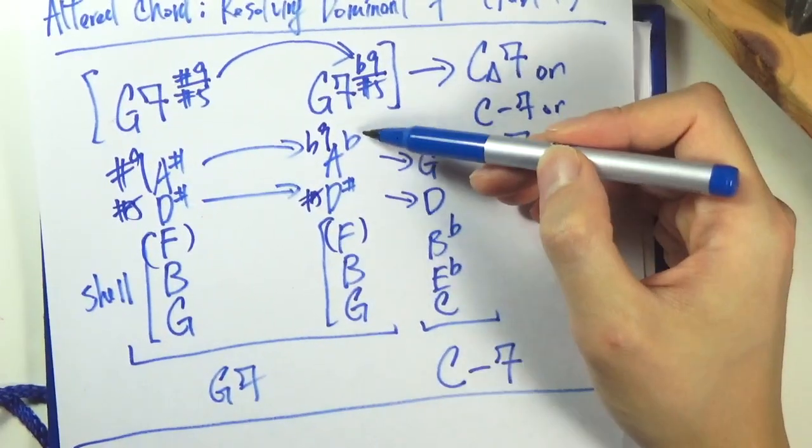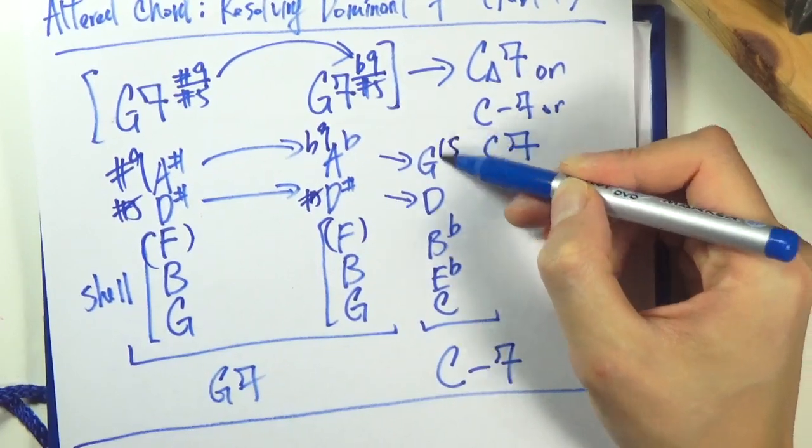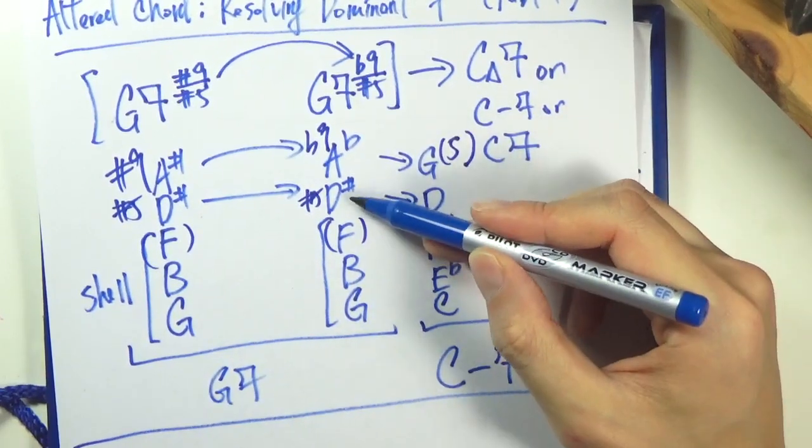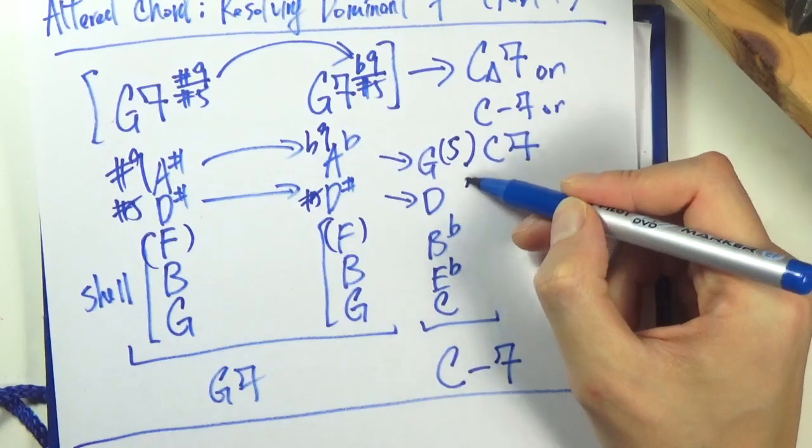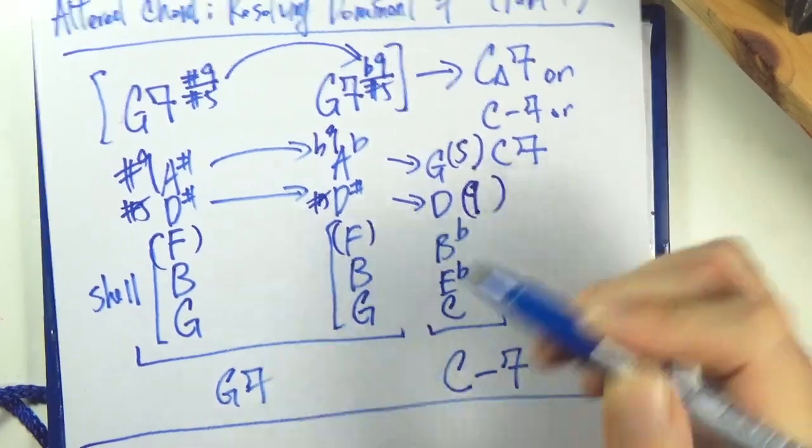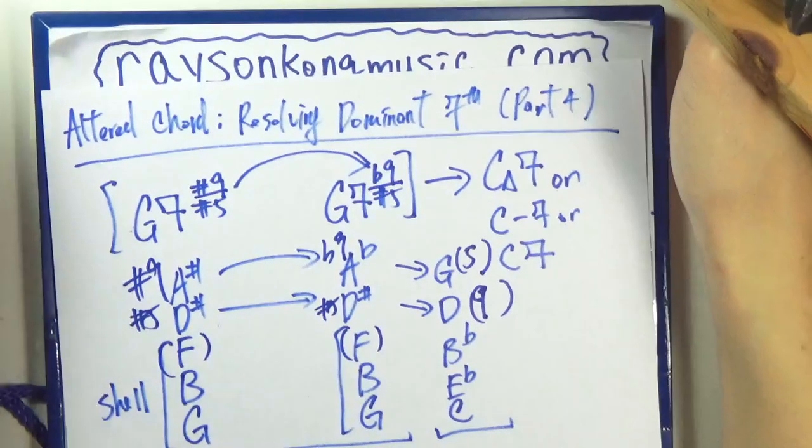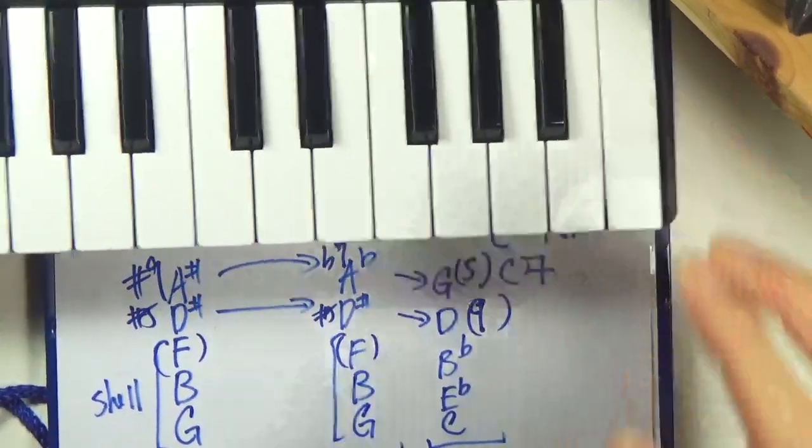The flat 9 resolves to the fifth of the one chord. Sharp 5 of the dominant resolves to the ninth of one. Let's take a listen to this example here - G7 sharp 5 sharp 9.